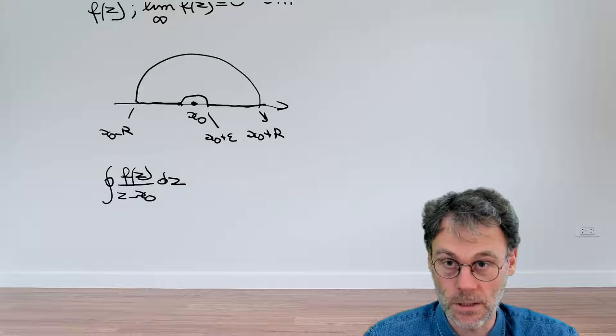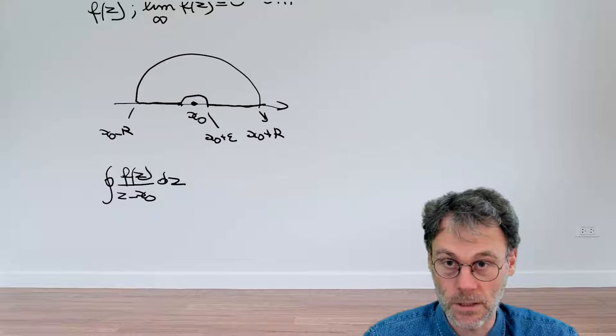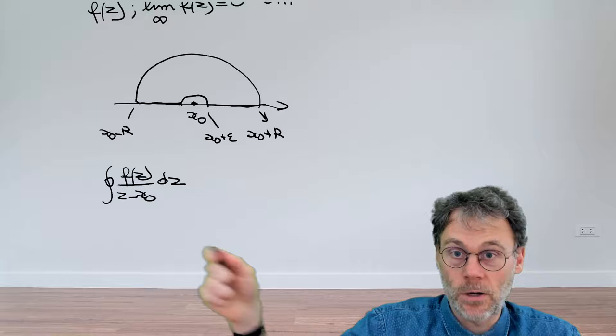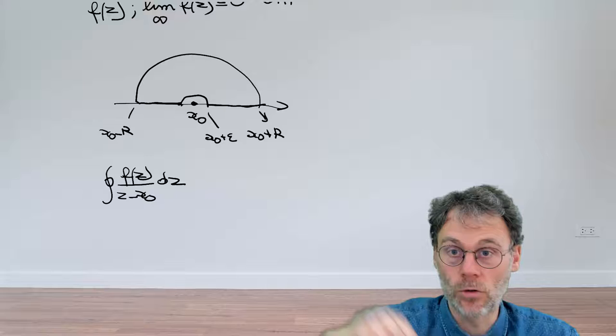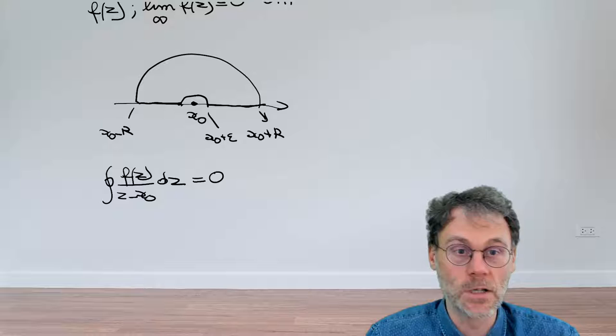Let's see where this takes us. We should be able to figure out on sight what this is, because there's only a single singularity here at x₀, and we've excluded that from our contour. Otherwise it's a well-behaved holomorphic function, so this contour integral will be equal to zero thanks to Cauchy's theorem.